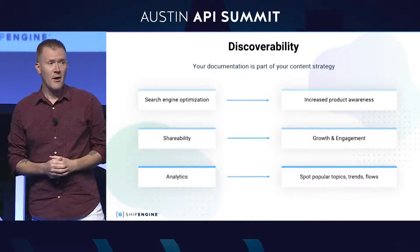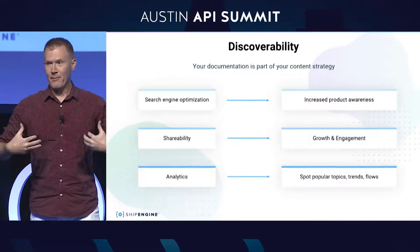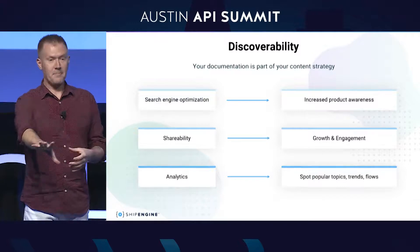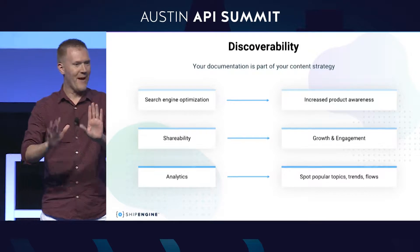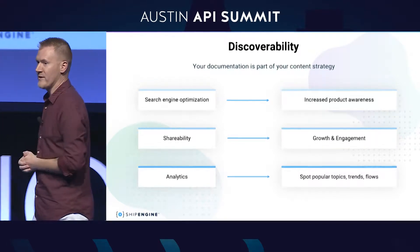In ShipEngine's case, we want people who have never heard of ShipEngine to be able to find us because they went to Google and typed 'how do I print a UPS shipping label?' — so we need good SEO for that to work. Shareability: once someone figures out they found on ShipEngine's docs how to print a UPS shipping label, you want them to be able to send that link to their colleague via email or Slack. And then analytics — we need analytics on our docs so we can determine which pages are most popular, notice that there's a constant flow where people go to this page, then this page, then this page, so we can optimize for that flow or recommend it to people.